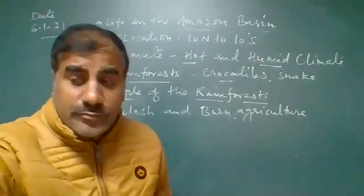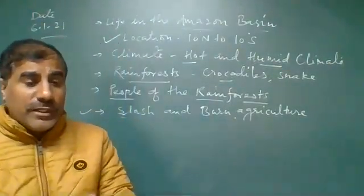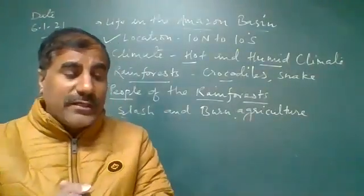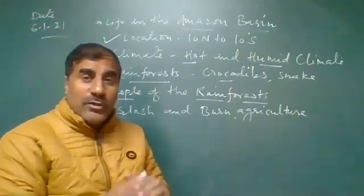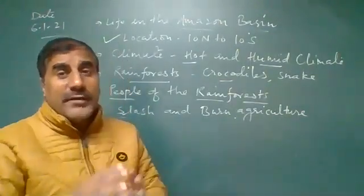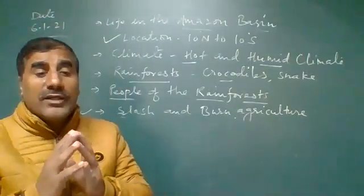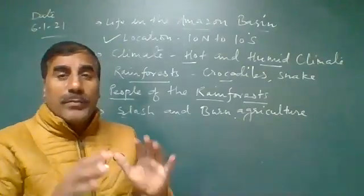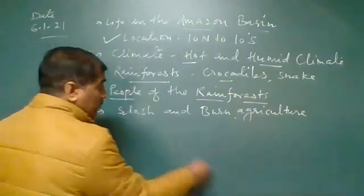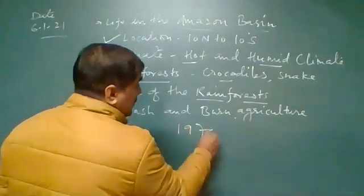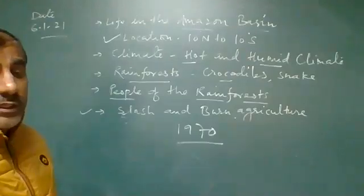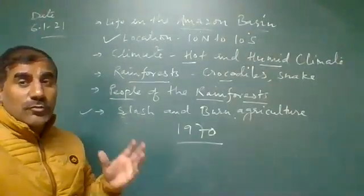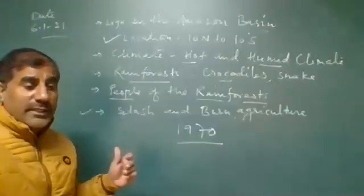What type of crops do they grow? They grow potato and staple fruits in that area. Cassava is the main crop grown in the Amazon Basin. Coffee and coca also grow in that area. The Amazon Basin was first connected with a road in 1970, when the Trans-Amazon Highway was built through the rainforest.